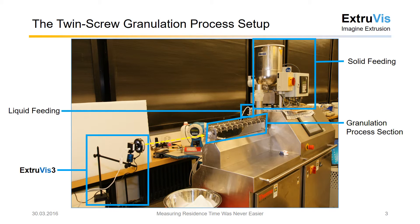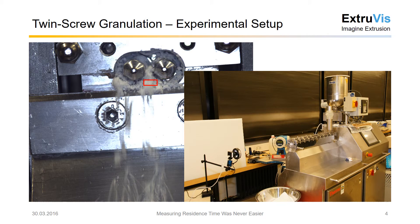As you can see, the camera looks towards the region of interest — that is the exit area of the granulator where the granules fall off — and in that region we want to measure the tracer concentration. I have highlighted here the region of interest in which we actually measured the tracer concentration.